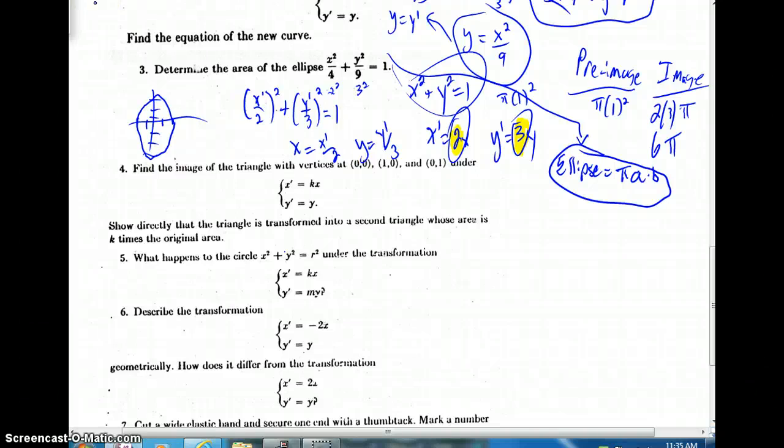All right, let's keep going with expansions, continuing on with some more problems here. Number four, find the image of a triangle with vertices (0,0), (1,0), and (0,1). Well, it only would take a moment to plot that out.